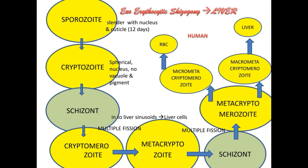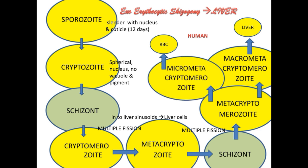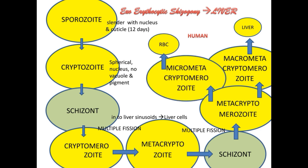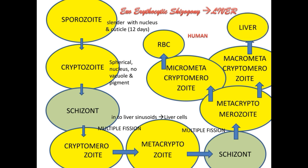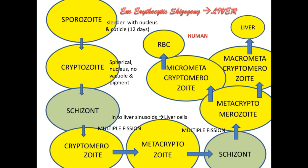Metacryptomerozoites are of two types: macro-metacryptomerozoites and micro-metacryptomerozoites. Micro-metacryptomerozoites infect the RBCs, and macro-metacryptomerozoites infect the liver cells. So the phase in the liver cells proceeds from the sporozoite up to the macro and micro cryptomerozoites, with micro-metacryptomerozoites entering the RBC to start the next phase.